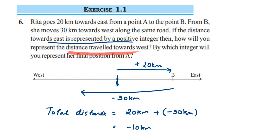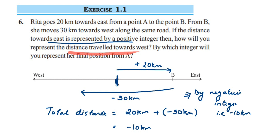They are asking by which integer will you represent her final position from A. From A, she is at minus 10 km — that is, she is towards the west direction and it will be minus 10 km. So we are going to represent the distance travelled by Rita from point A by a negative integer, that is minus 10 km. That's it! It was a very simple question. I hope it is clear. In case you have further questions or doubts, you can drop a comment. Thank you so much for watching.